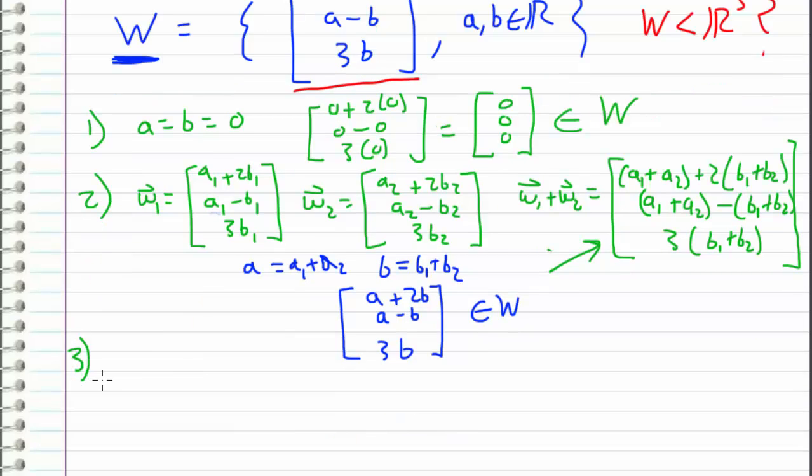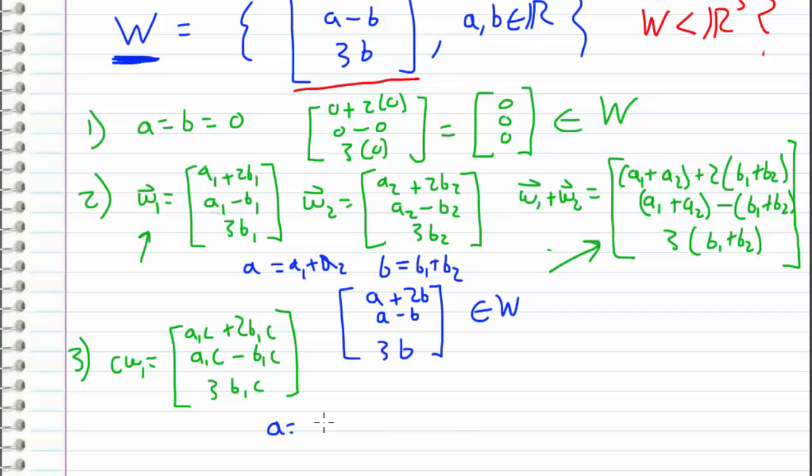So the last thing that we need to check is whether or not this is closed under scalar multiplication. So let's consider our W1 again. So an arbitrary vector W1, and let's multiply it by a scalar C. So C W1 is equal to the vector A1C plus 2B1C, A1C minus B1C, and 3B1C. So with similar reasoning, we can say, hey, let's let A equal to A1C in this case. And let's let B equal B1C in this case. And again, the reason why we can do this is because A and B are constants, they're real number constants. And since C is also a constant, A1 times C is also a constant. So these are both still elements of the real number. And that's why we can make this substitution in the right here and up here.